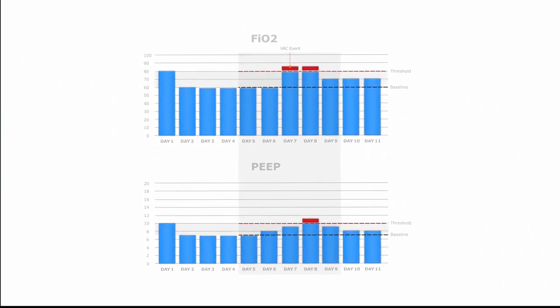Here is a patient that does have a ventilator-associated event based on FiO2. This patient was on the ventilator for 11 days. On days five and six they had stability based on FiO2, with the baseline set at 60, making the threshold 80. On day seven, the patient had worsening of at least 20 points and stayed above that level for one more day — meeting criteria for a ventilator-associated condition. The gray box extending from day five through day nine represents the VAE event window period.